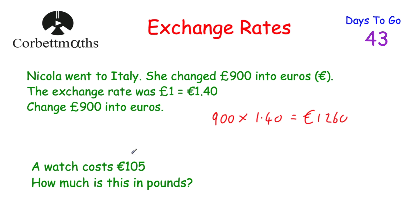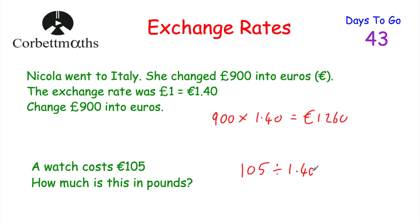Now we're told a watch costs €105. How much is this in pounds? So now we're working backwards. We just need to see how many lots of €1.40 go into €105. So we divide €105 by 1.4, which equals £75.